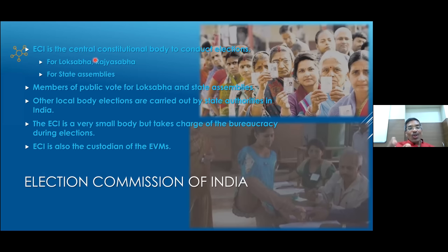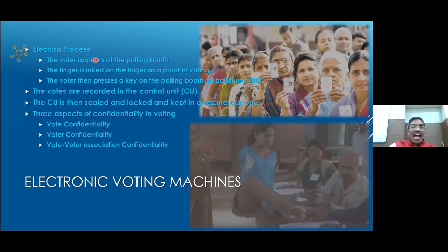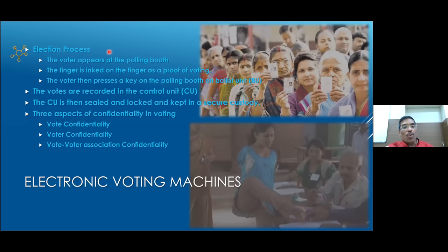The ECI is the central constitutional body to conduct elections and custodian of EVMs. It is a very small body, but during elections it takes charge of the entire bureaucracy. Election processes: a voter appears at the polling station, his finger is inked as proof of voting at the time of verification. The voter then presses a key on the ballot unit. Voter identification and verification and actual voting are two separate, independent processes.